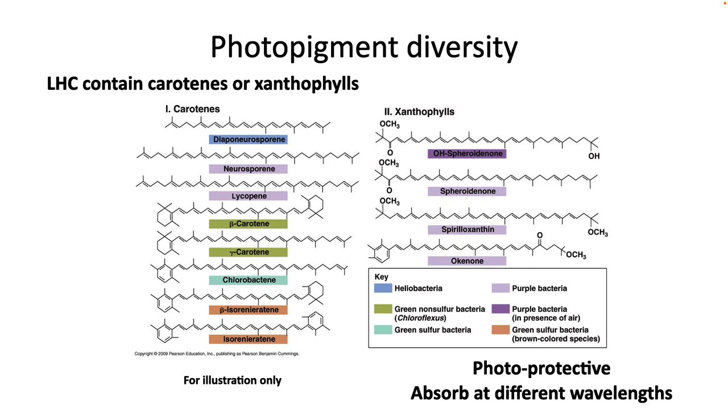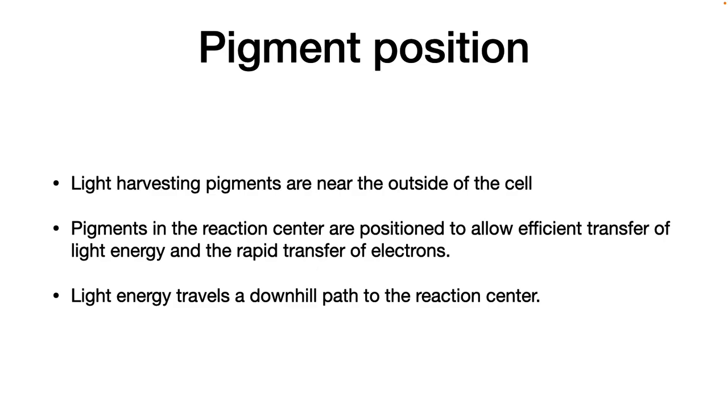The close proximity increases the likelihood that the carotenoid will react with a triplet state of chlorophyll and take the overly excited electron away from chlorophyll before it can do any damage. There is a wide variety of carotenoids present in bacteria with various structures. The variation in structure results in absorption of different wavelengths. Many other species have carotenoids to protect from oxidative damage. Speaking about positioning, the position of pigments is important in their roles in the cell. Light harvesting pigments are positioned near the outside of the membrane. This allows maximum light collection. The pigments in the reaction center are positioned to allow efficient transfer of light energy and the rapid transfer of electrons.